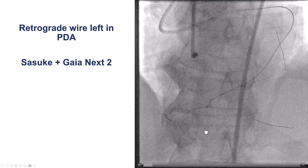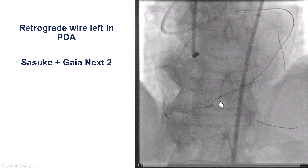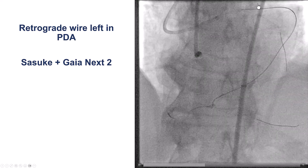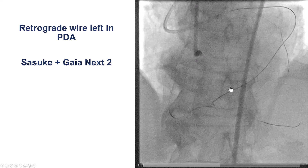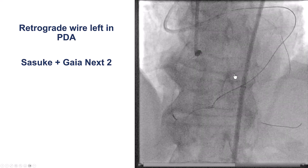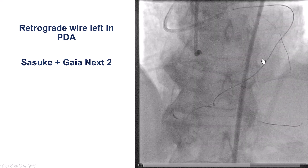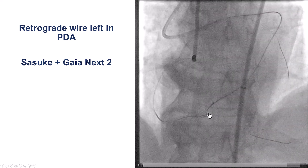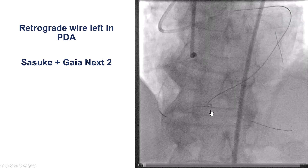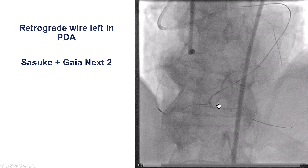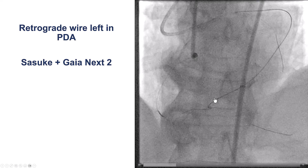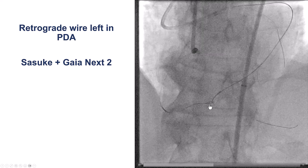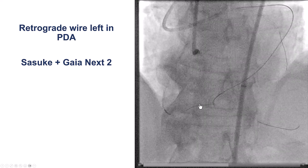To approach this problem, there have been reports in which a dual-lumen microcatheter, like the Sasuke, could be delivered through collaterals, both septal and epicardial. In this case, this was a relatively large epicardial, and we were able to deliver the Sasuke dual-lumen microcatheter all the way to the distal cap over a guidewire advanced into the PDA. After doing that, we had much more support to advance a retrograde Gaia-NX2, trying to puncture into the distal right coronary artery.